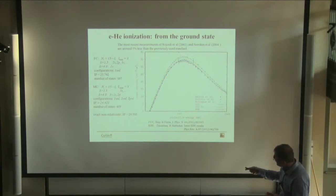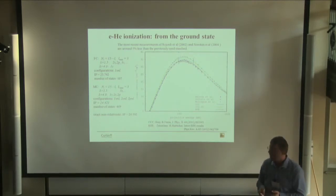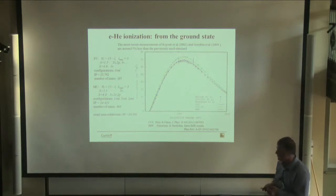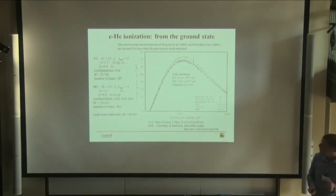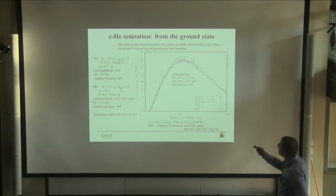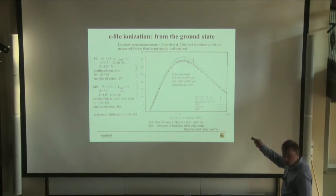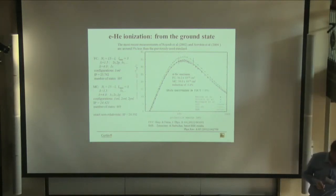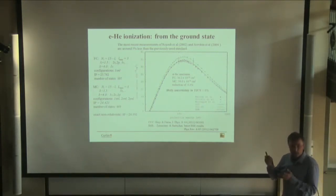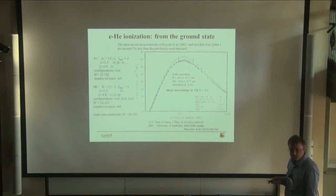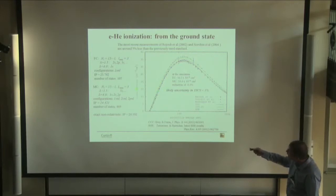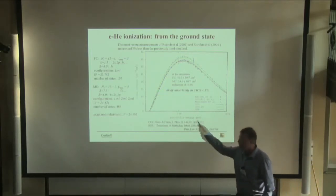The difference between the frozen-core model and the multi-configuration model is about 4.5%. What is the accuracy of the calculations we now have? I think it is probably less than 3%, probably better at higher energies above 100 eV and maybe a bit less at lower energies.